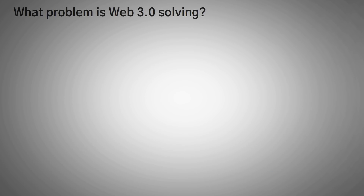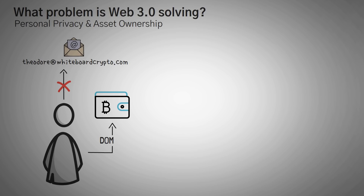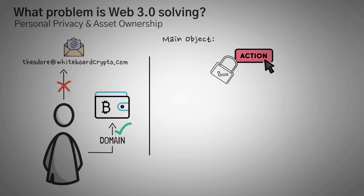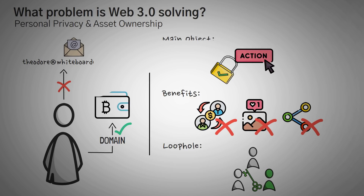The two problems that Web3.0 is solving are mostly personal privacy and asset ownership. Instead of being attached to an email address like theodore@whiteboardcrypto.com, you could instead be attached to a specific wallet address or a domain that points to a wallet address, from which all of your actions on the internet have to be confirmed by you. Nobody else could fake your transactions or social media posts unless they had your private key.